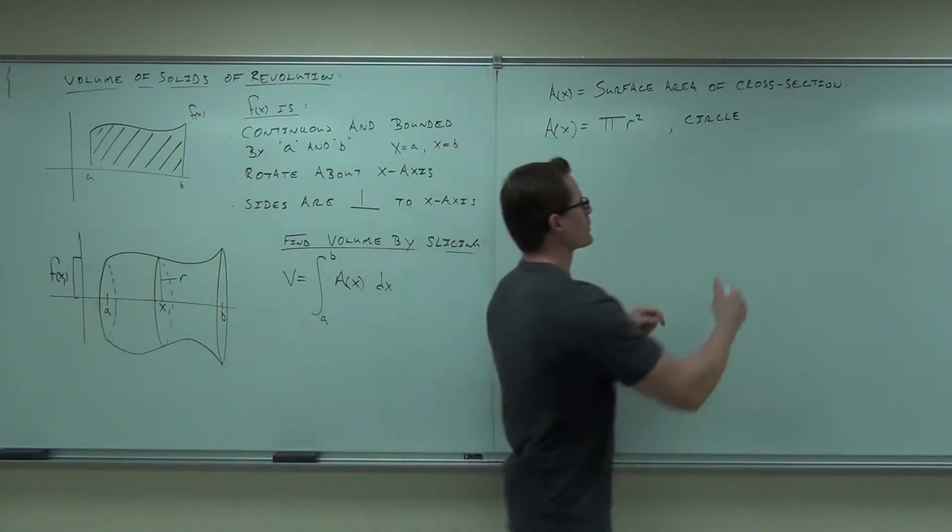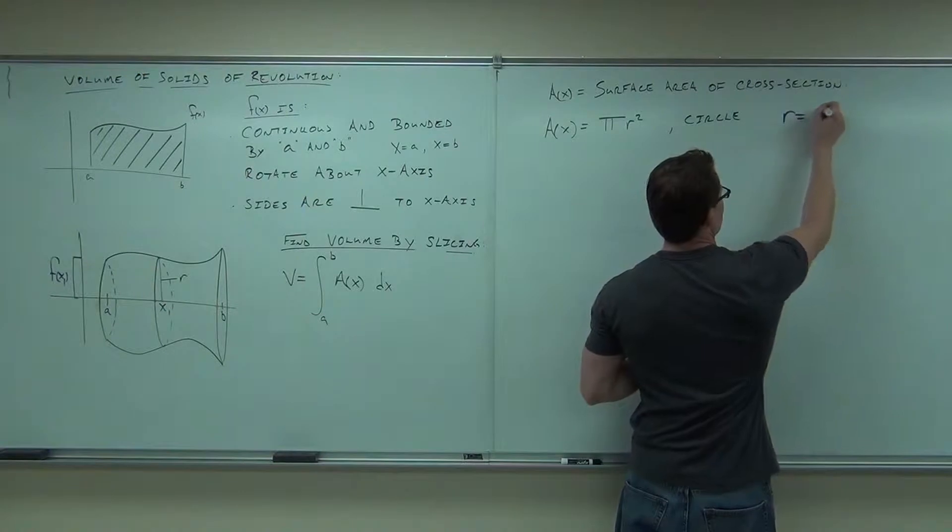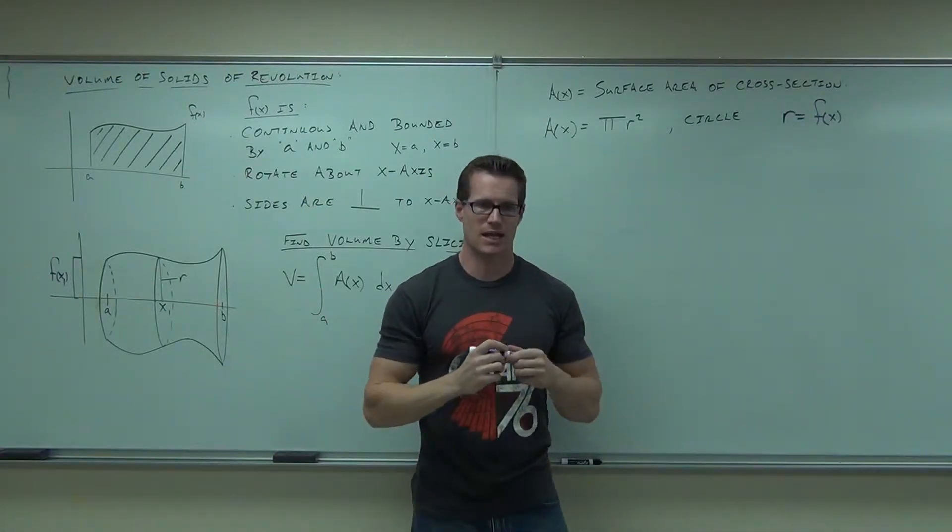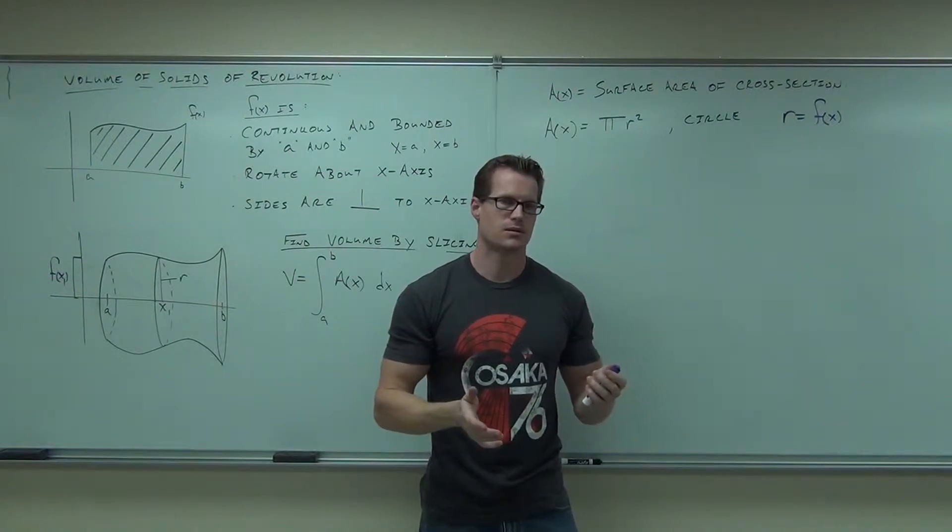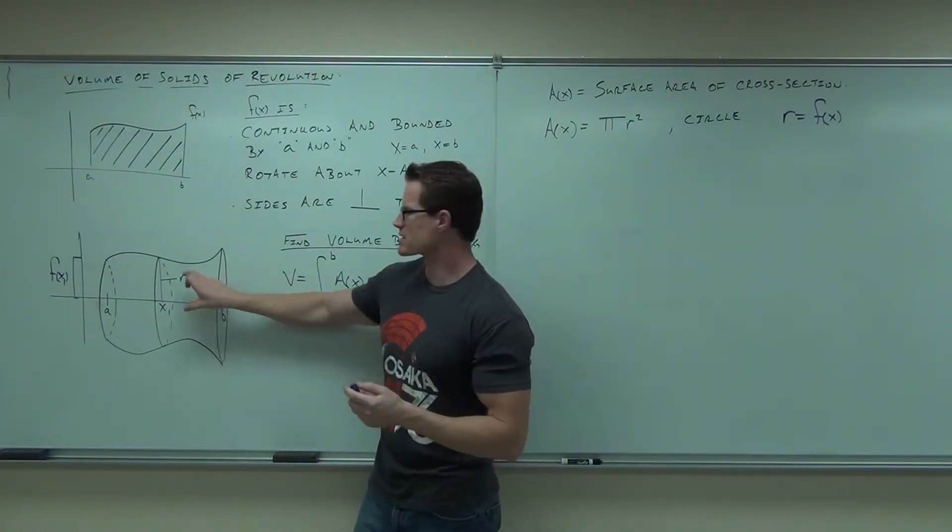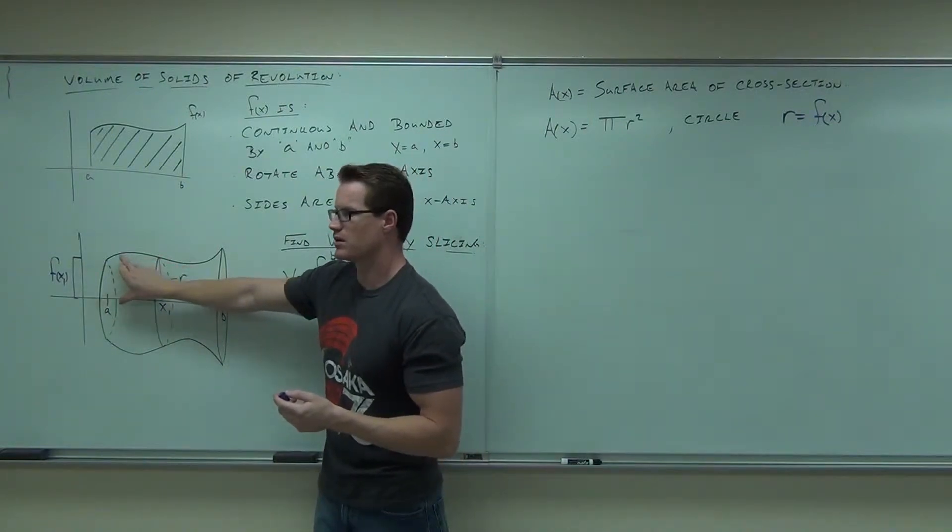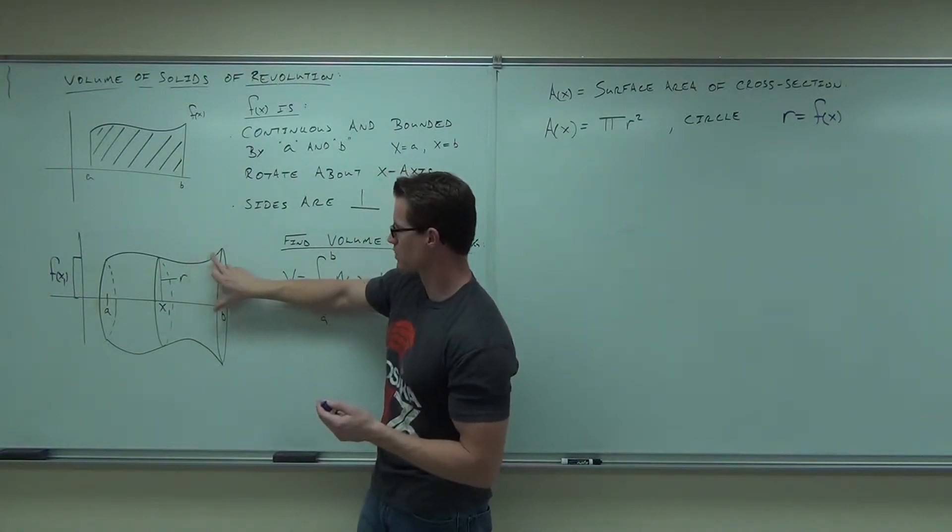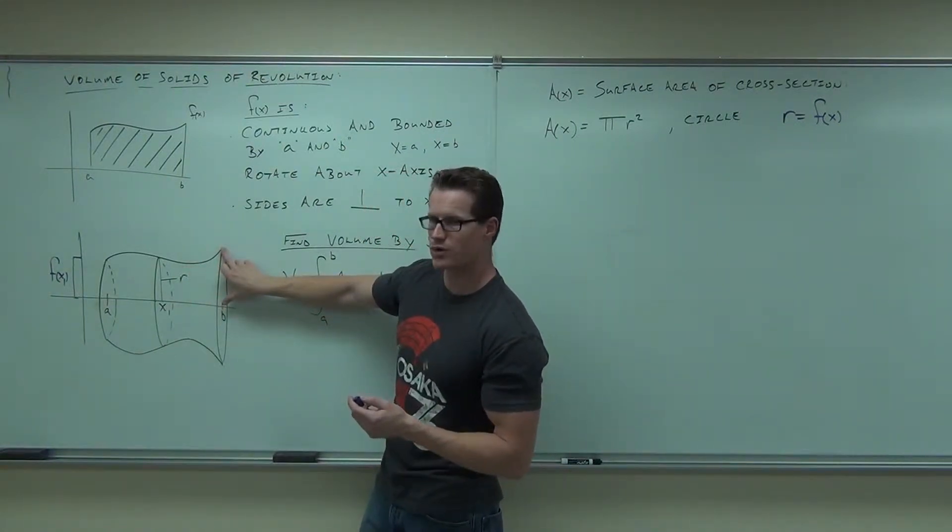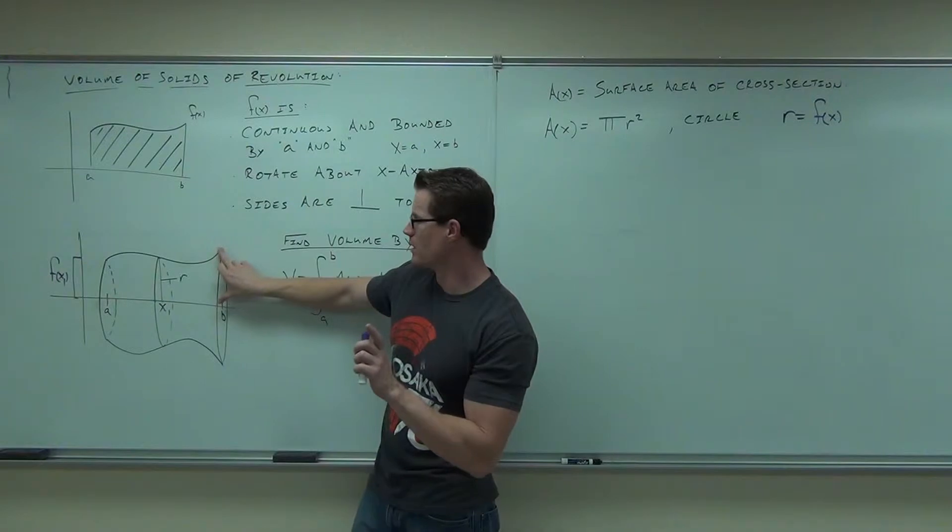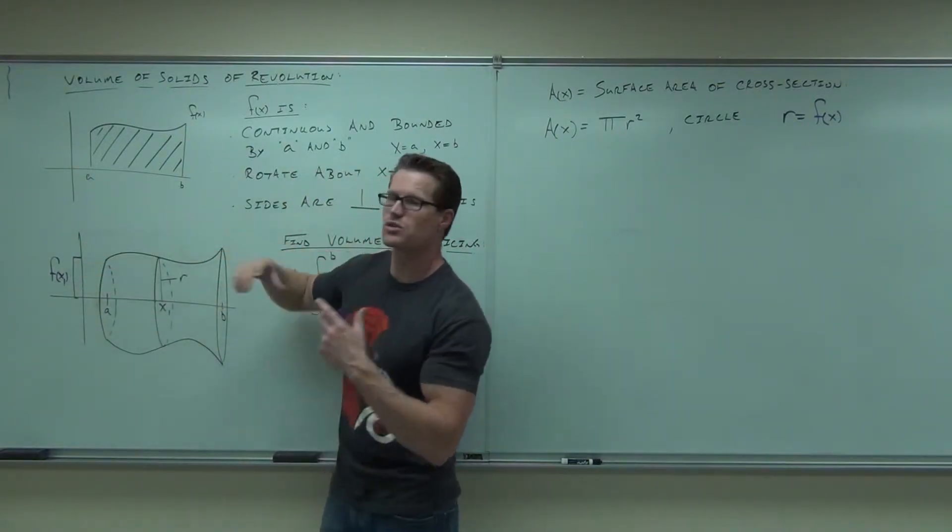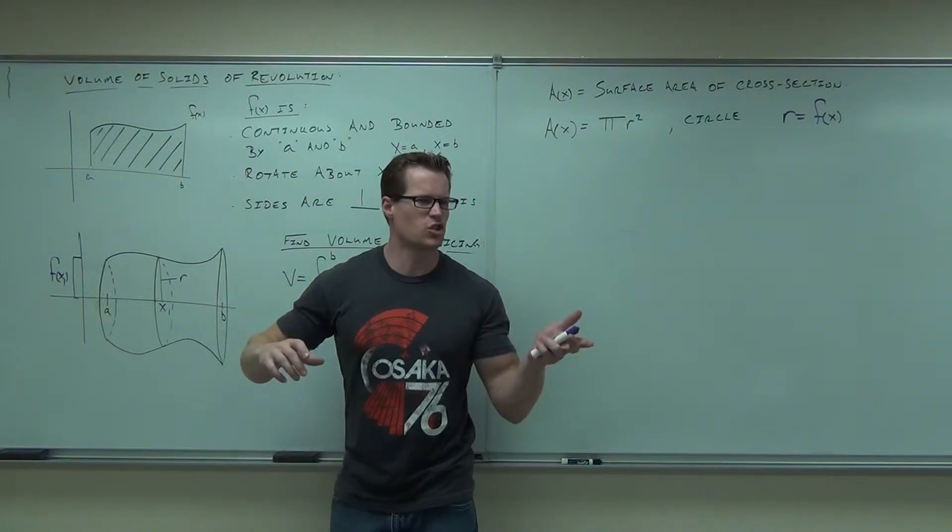So here's what I'm going to say: if this is a circle, then the radius of that circle has to equal f of x at any point x. Yes, no? Is the radius the height of your circle at this point? The radius is the height of your circle, right? And it changes. Depending on where your x is, the radius would be here, the radius would be here.